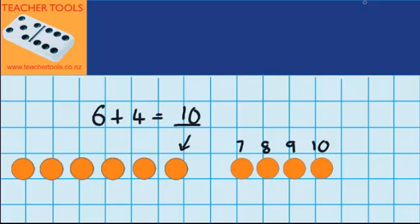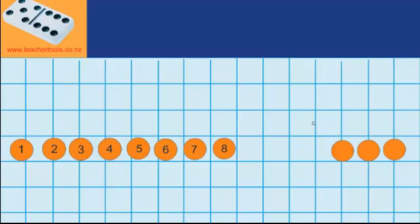Let's try another question. Now here you can see I've got eight counters, and over here I've got three counters. I want to find out how much I've got if I put them all together. Well I can record that like this.